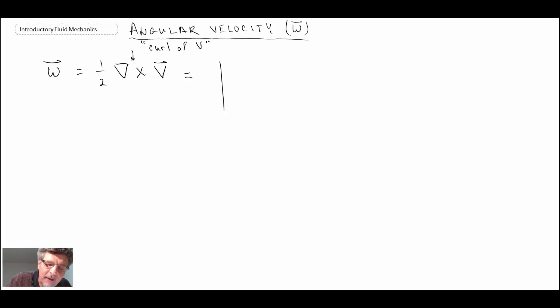We can expand that out: i, j, k. The second row we have partial, partial x, partial, partial y, partial, partial z. And then the third we have u, v, w.